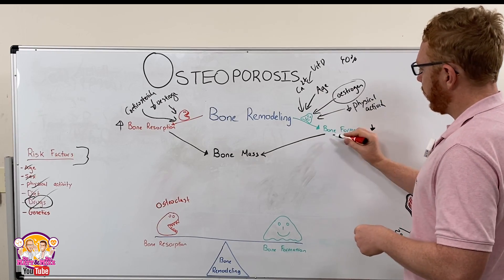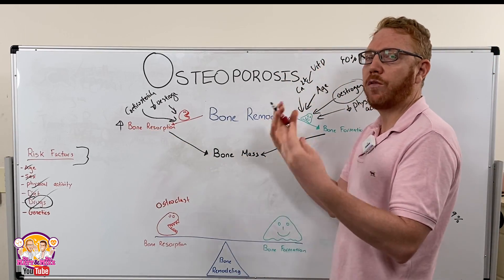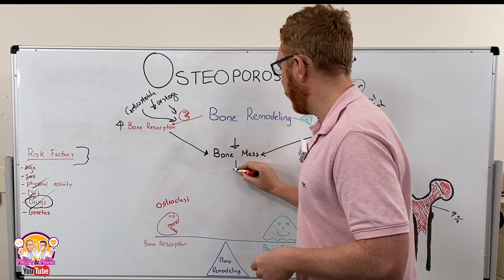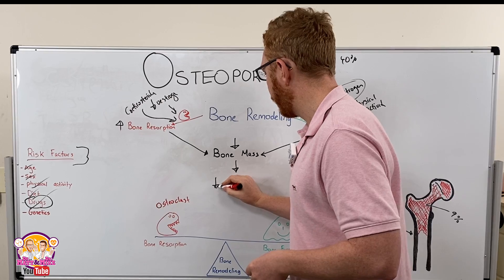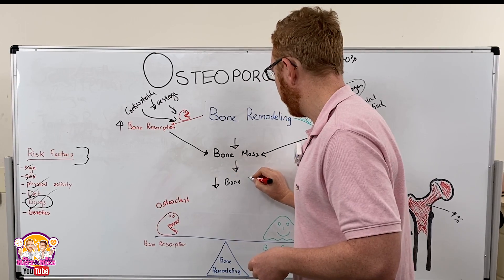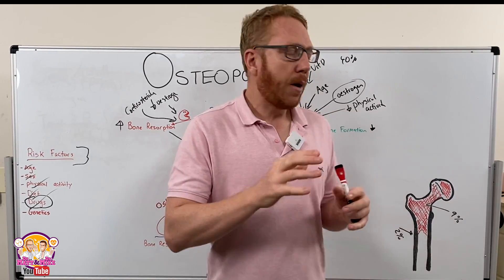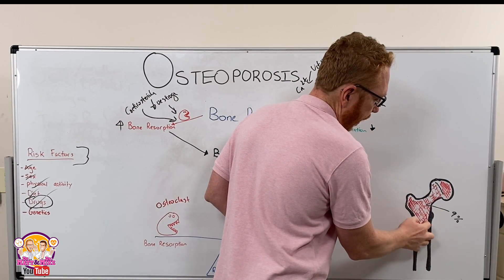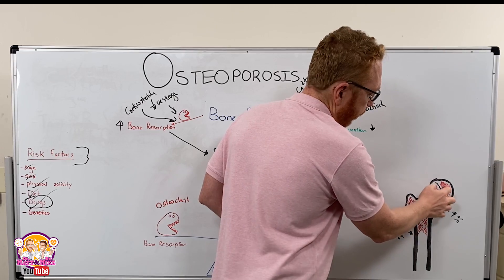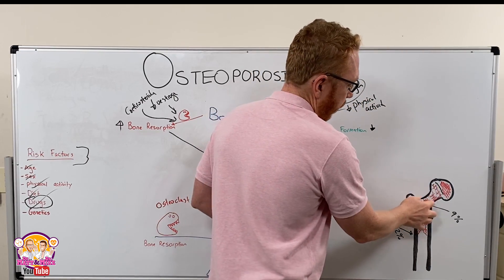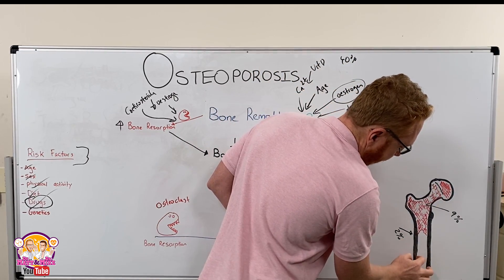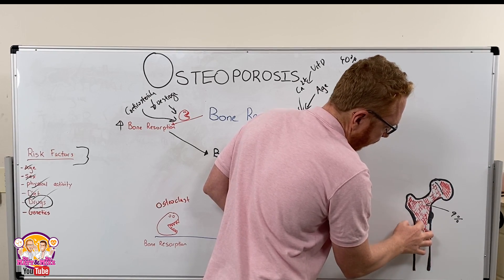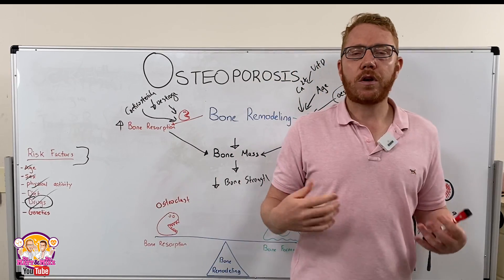The combination of decreased bone formation and increased bone reabsorption as we age leads to a decrease in bone mass and therefore a decrease in bone strength. Histologically, we see greater holes or spaces in the spongy bone — which is why it's called porosis — along with a thinning of the compact bone.